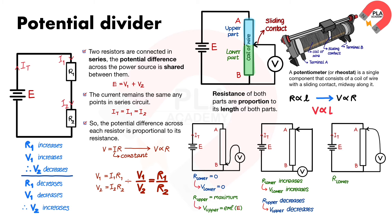If the sliding contact is at point A, the resistance of the lower part is at maximum, and so the potential difference across it is equal to the EMF of the power supply. Meanwhile, the resistance of the upper part will be zero, and so the potential difference across it will also be zero.